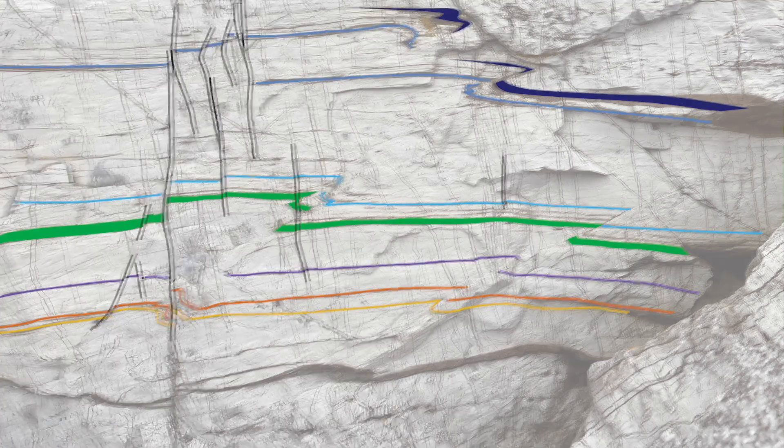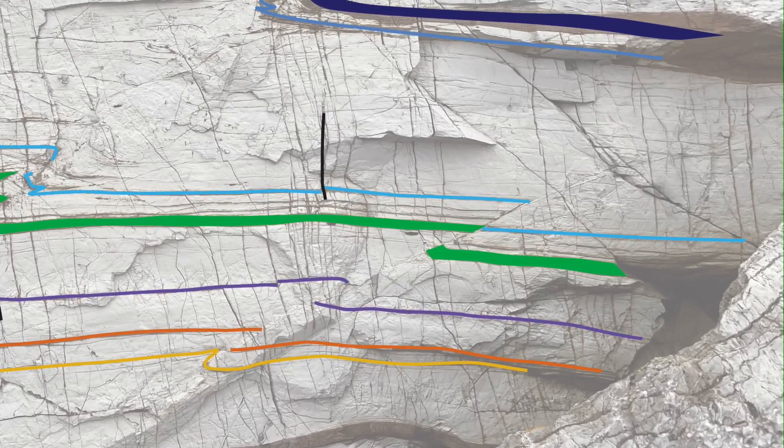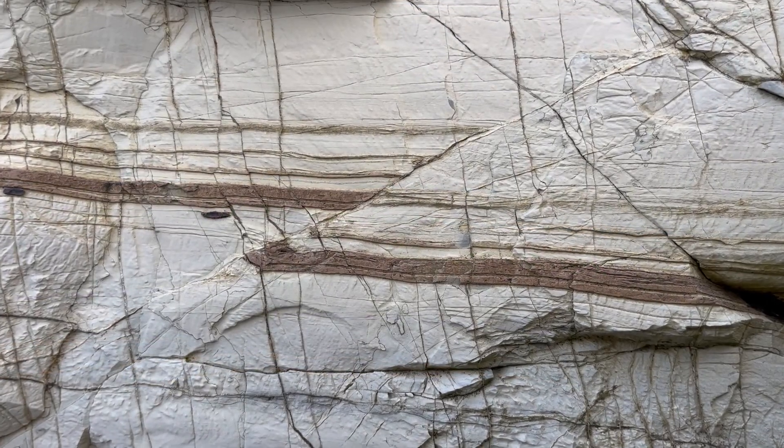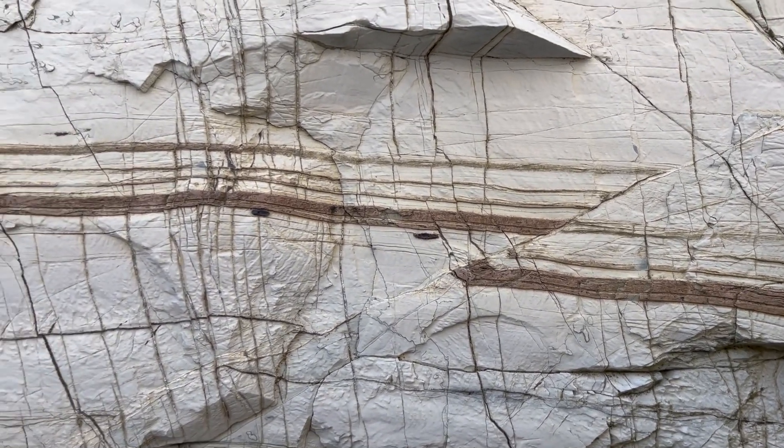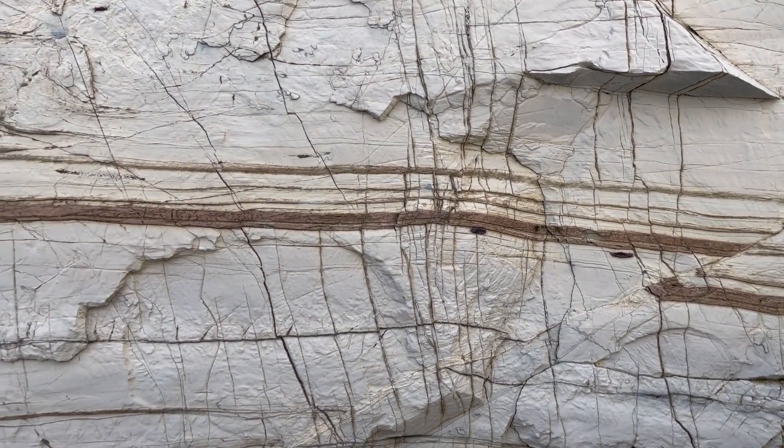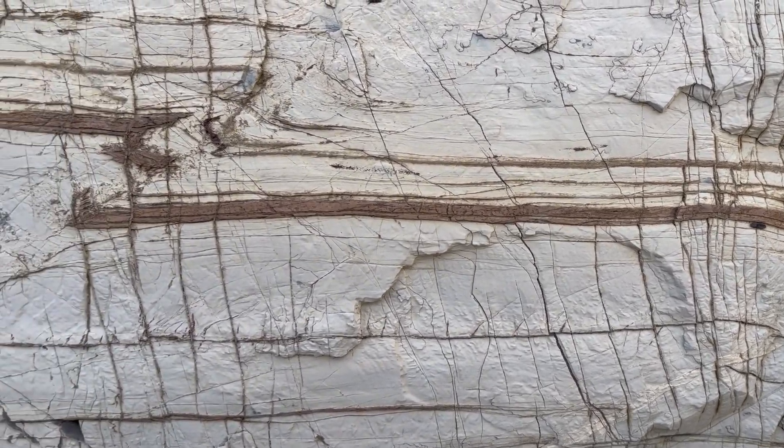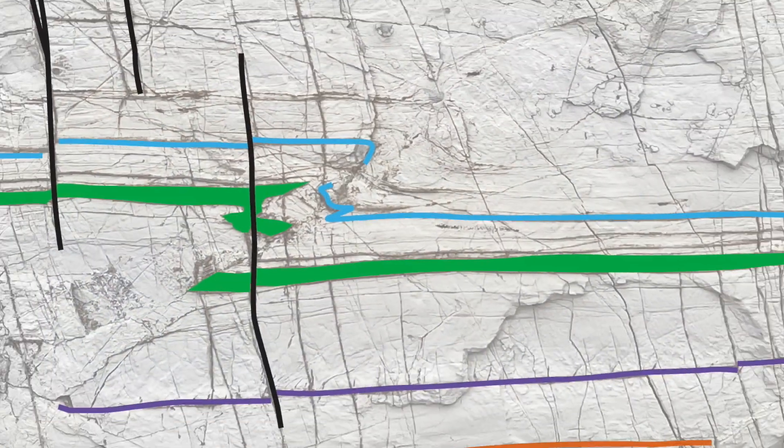But there's another type of fault here. The layering here is offset, and as we trace the layers along, we find little folds and more offsets. So let's interpret these other faults.